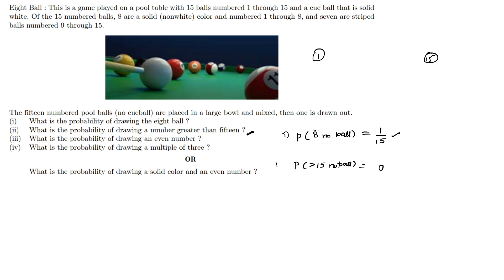And coming to the third question: what is the probability of drawing an even number? From 1 to 15, the even numbers are: 2, 4, 6, 8, 10, 12, 14 — that is 7 even-numbered balls. So, the probability of drawing an even number is 7/15.